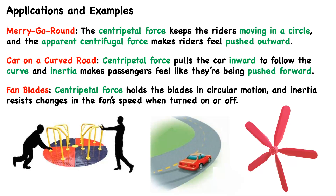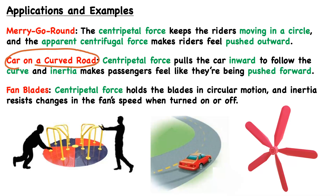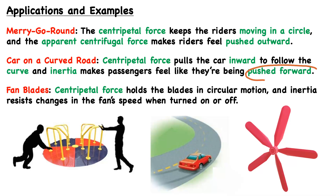There are many applications where inertia, centripetal, and centrifugal forces play an important role. One familiar example is a merry-go-round, where the centripetal force keeps the riders moving in a circle and the apparent centrifugal force makes riders feel they are being pushed outward. Another example is a car on a curved road: the centripetal force pulls the car inward — as shown in the picture, acting toward the center — to follow the curve, while inertia makes passengers feel pushed outward, which is the centrifugal force acting in the outward direction.